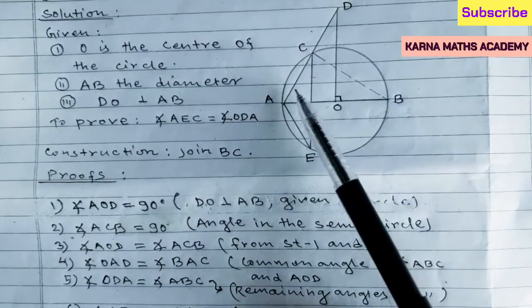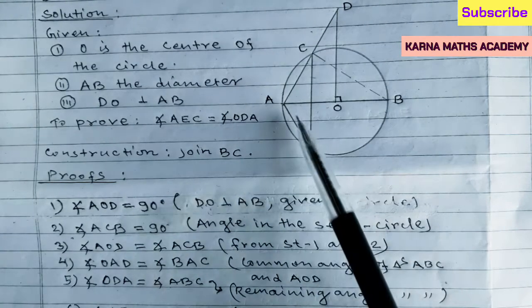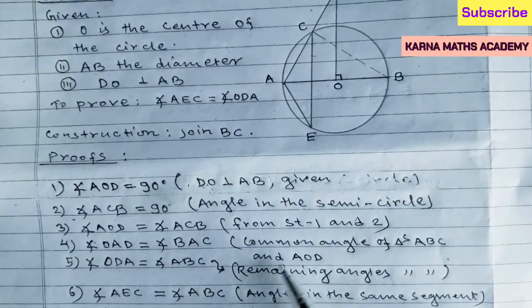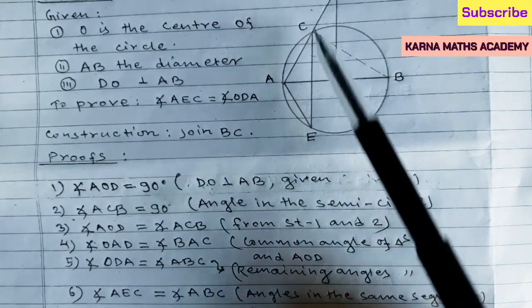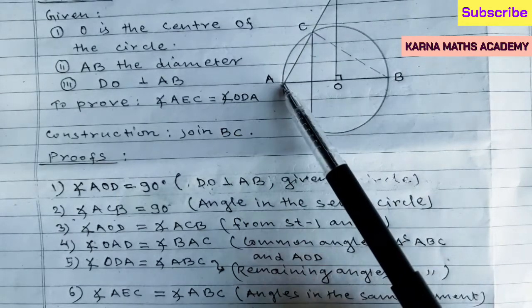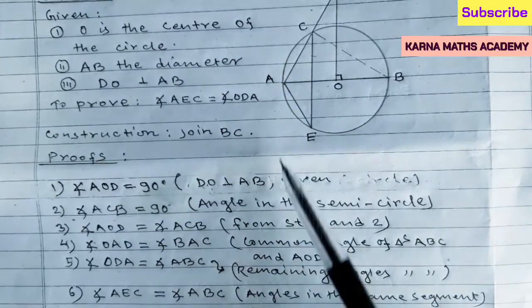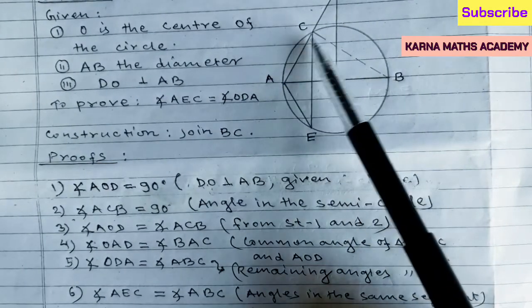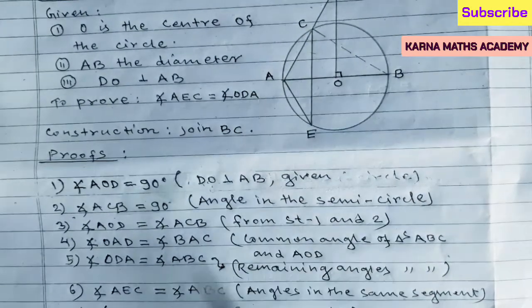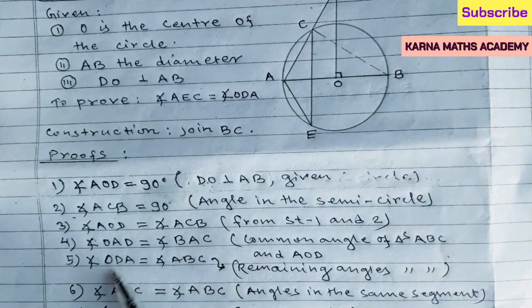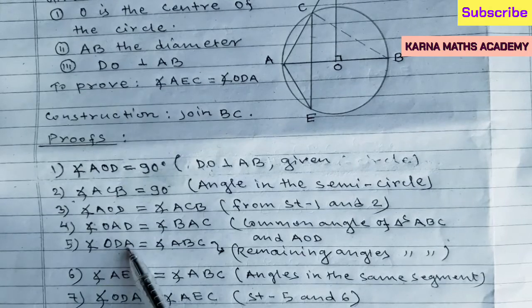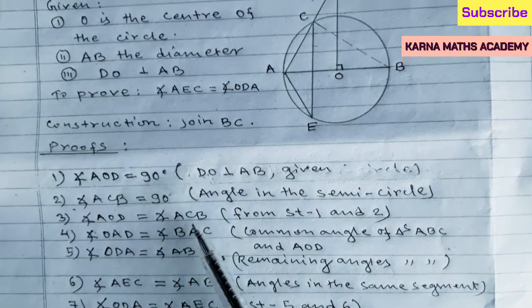Angle AEC equals angle ABC because both are subtended by the same arc AC. Angles in the same segment of a circle are equal, or angles at the circumference standing on the same arc are equal. So combining statements five and six, we get angle ODA equals angle AEC, or angle AEC equals angle ODA. This is the proof of question number 24.